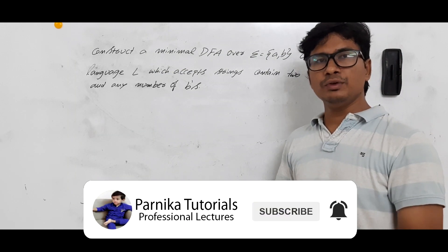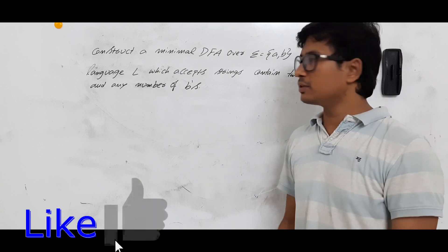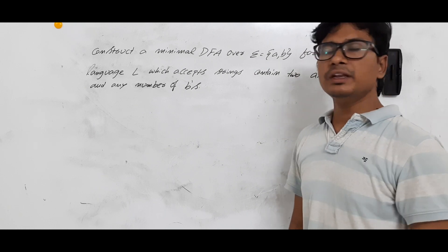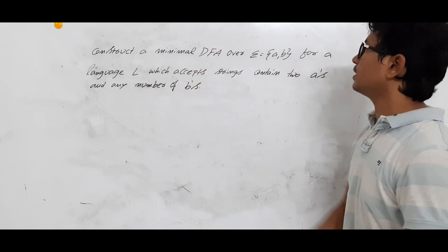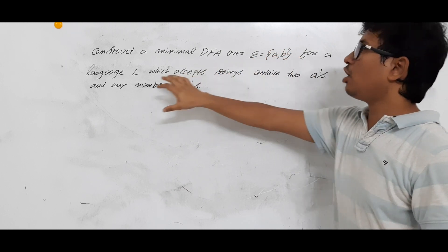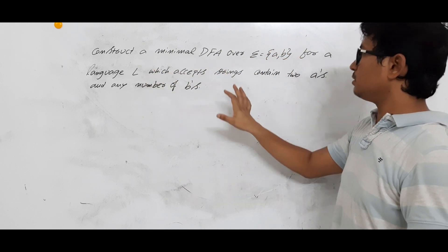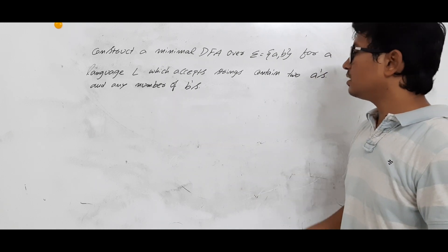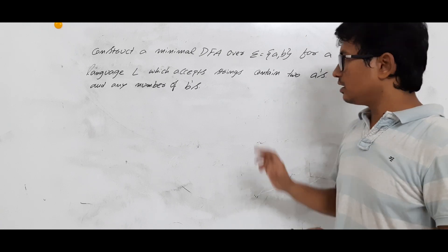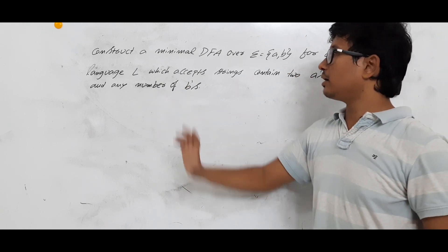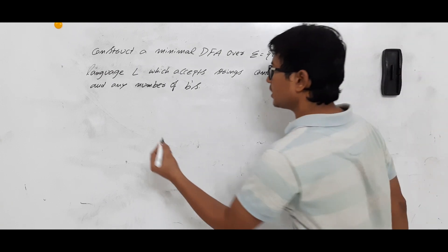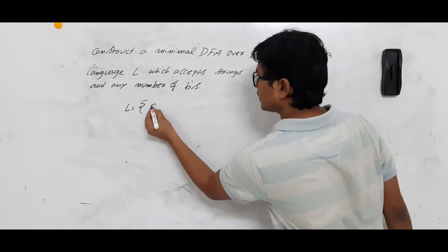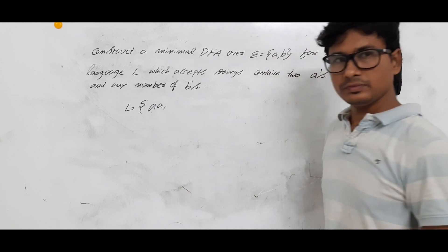Good morning friends. Till now we have solved several questions related to the minimal DFA. We will solve another question for better understanding. The question is: construct a minimal DFA over alphabets {A, B} for a language L which accepts strings containing exactly two A's and any number of B's.